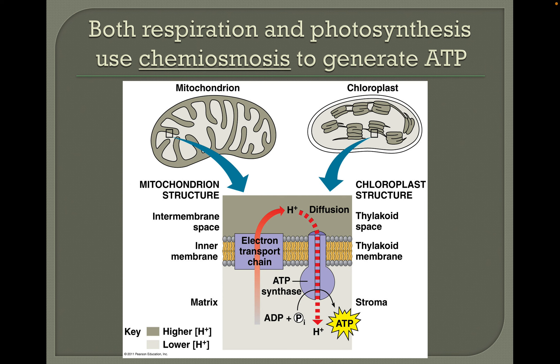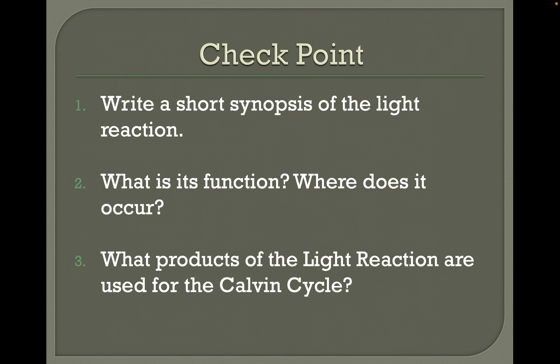Both cell respiration and photosynthesis use chemiosmosis to generate ATP, occurring in the thylakoid membranes and the mitochondrial membrane respectively — it's the same process. For a more detailed explanation of chemiosmosis, watch the cell respiration lecture video. Now, pause and write a short summary of the light reactions: what's their function, where do they occur, and what are the products of the light-dependent reactions?